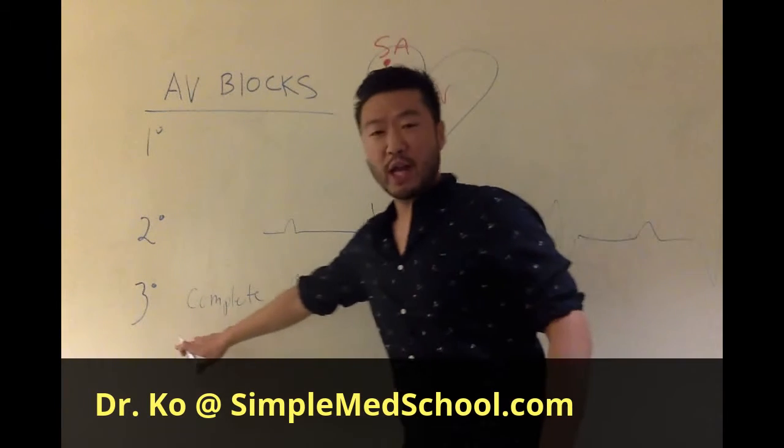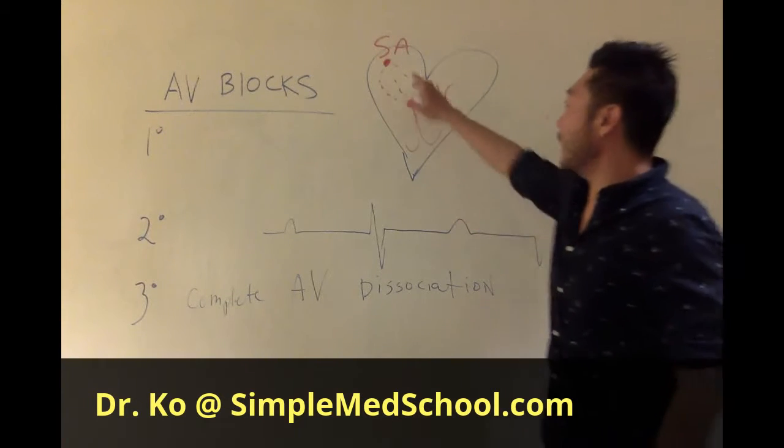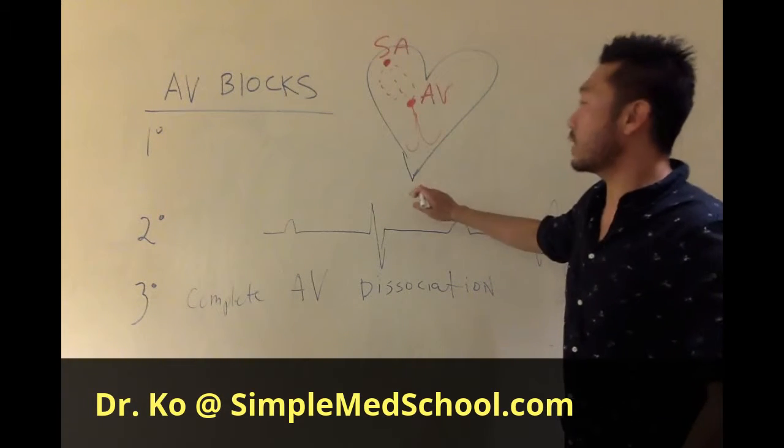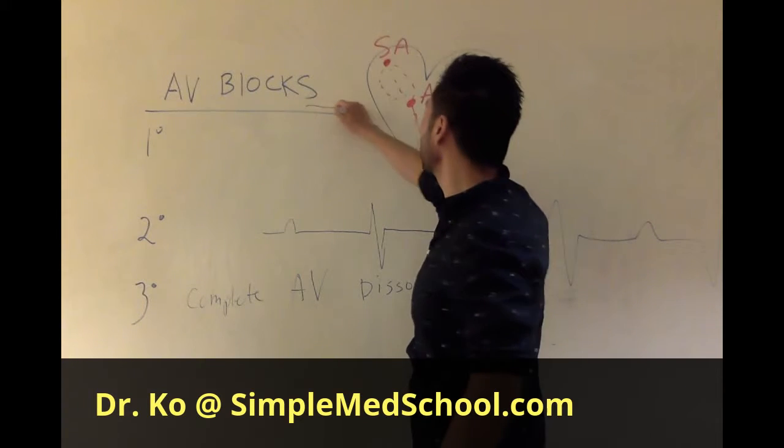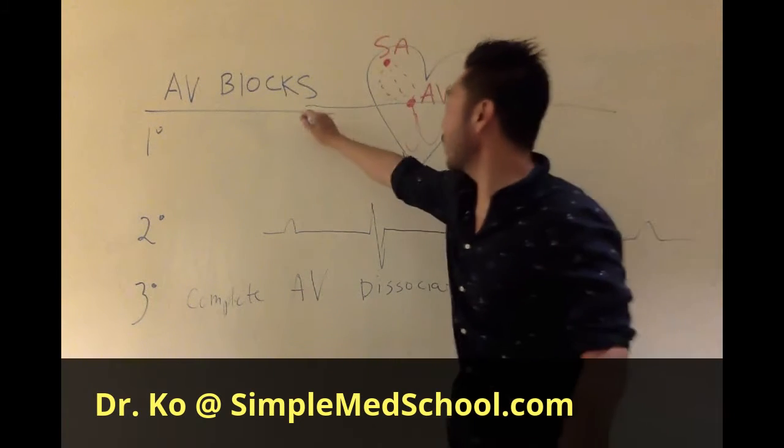Third degree, you have complete AV dissociation, meaning you have your atria up here, your ventricles down here, and there's no communication between those two. There's no communication.